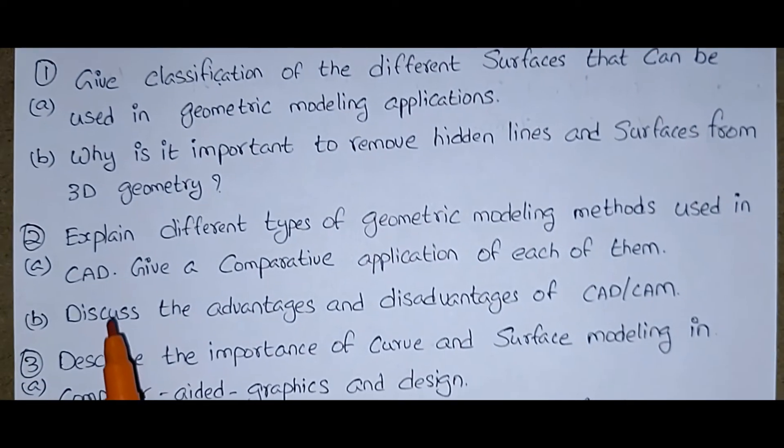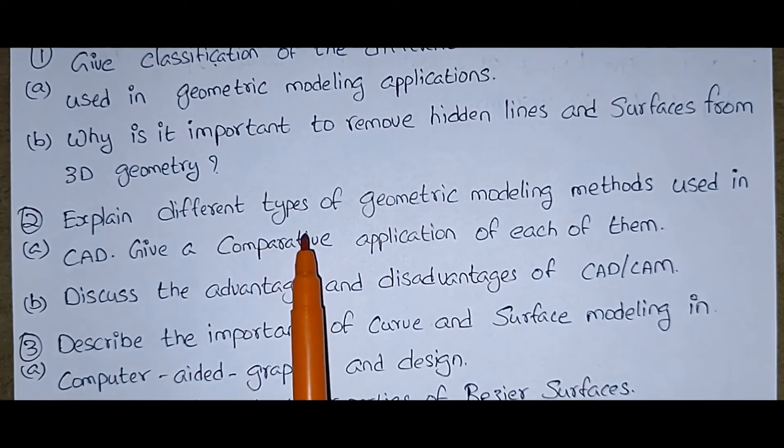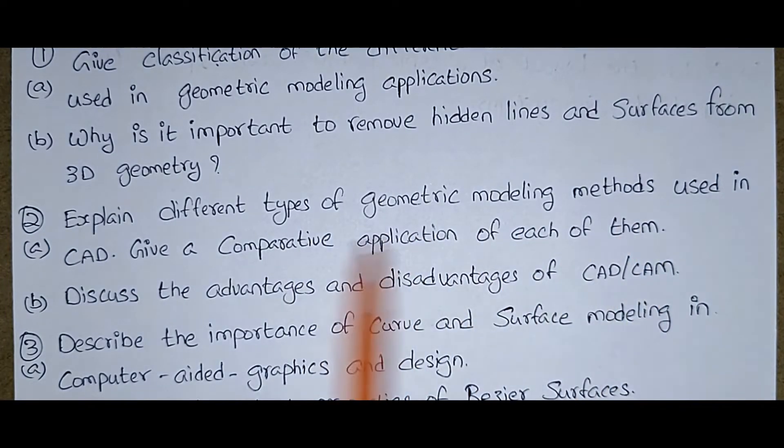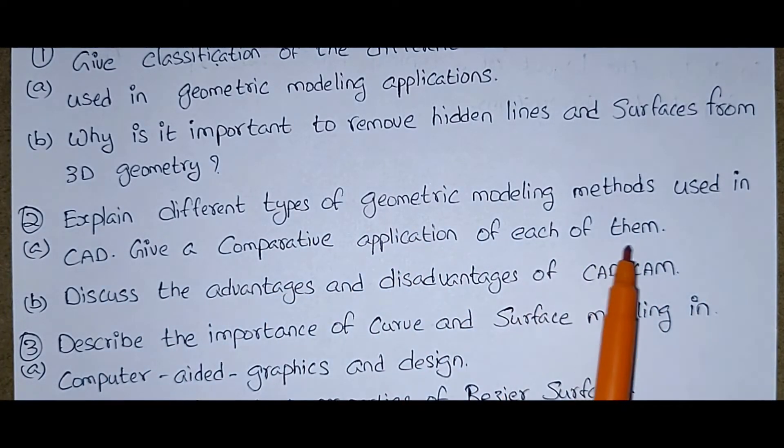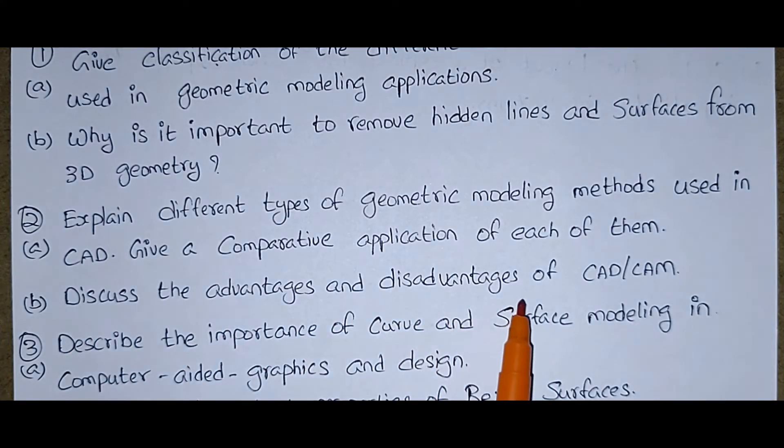Second one: Explain different types of geometric modeling methods used in CAD. Give a comparative application of each of them. And B bit is discuss the advantages and disadvantages of CAD CAM. So first and second you are having two bits.